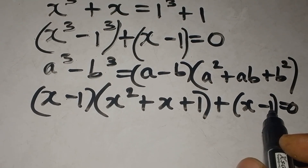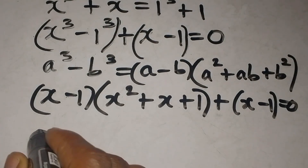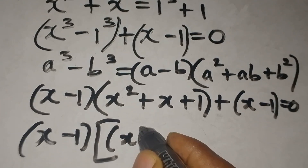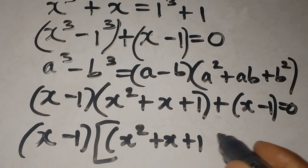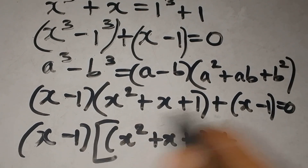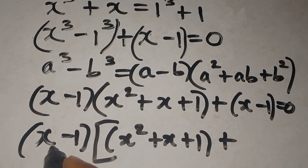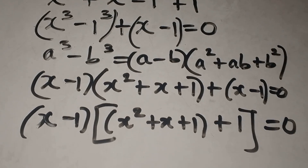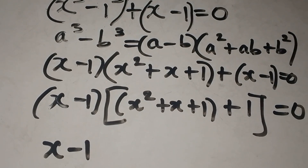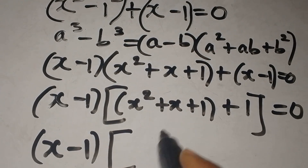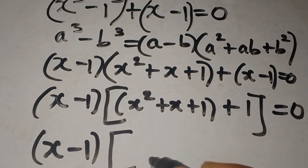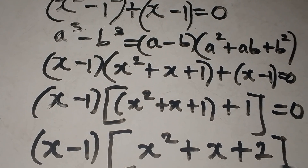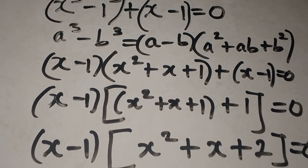We can see that x minus 1 appears as a common factor in both parts. It comes out as the common factor, leaving x squared plus x plus 1 in the first bracket. The second x minus 1 divided by x minus 1 gives 1, so we add 1 to get x squared plus x plus 2 in the bracket, and equate to zero.